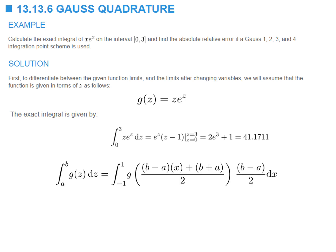Now I'm going to use the transformation introduced previously. The integral of g of z from a to b equals the integral from negative one to one of g of z — replacing z with the transformed expression — multiplied by dz, where dz is replaced by b minus a over 2 multiplied by dx.